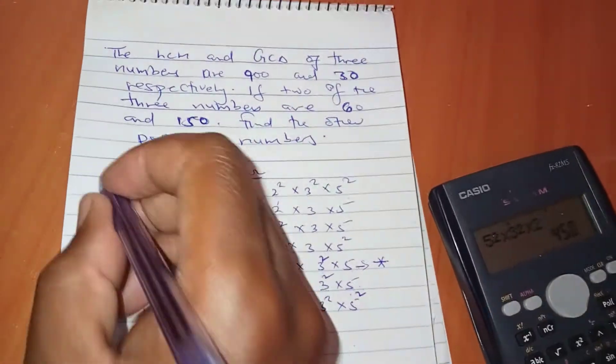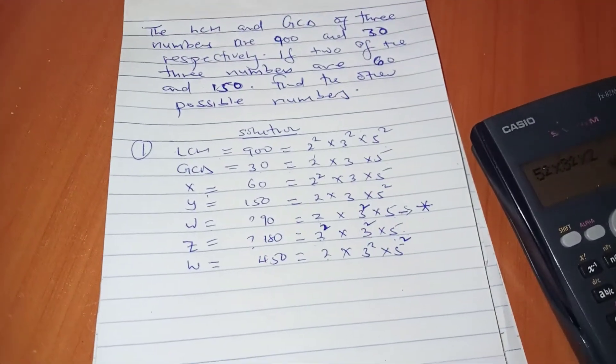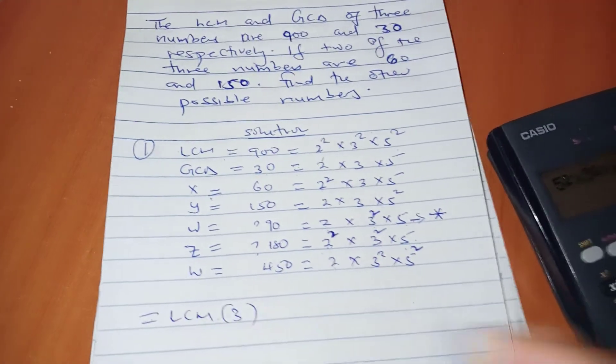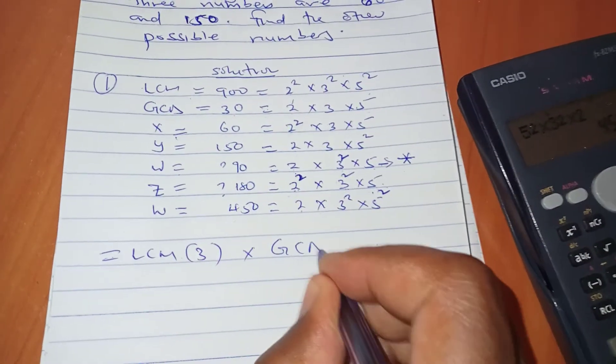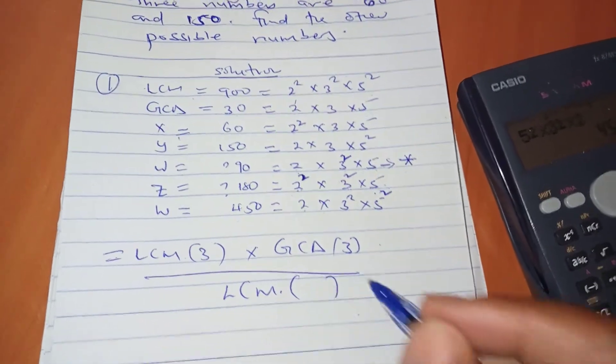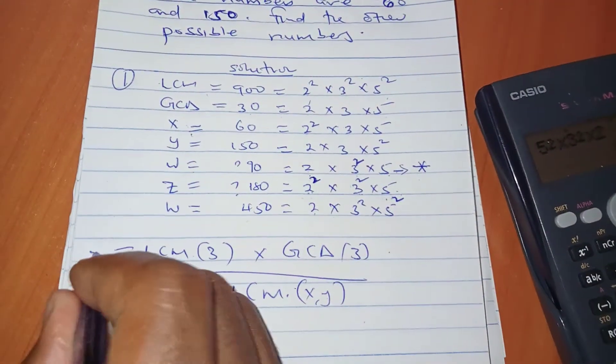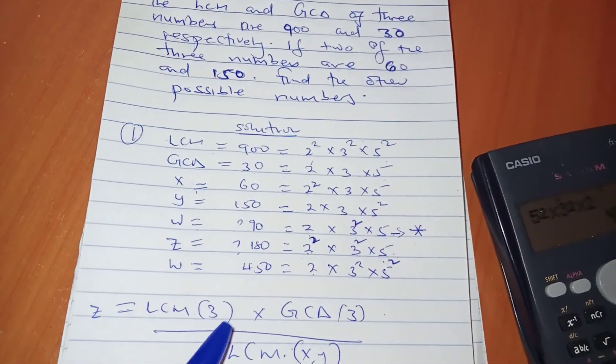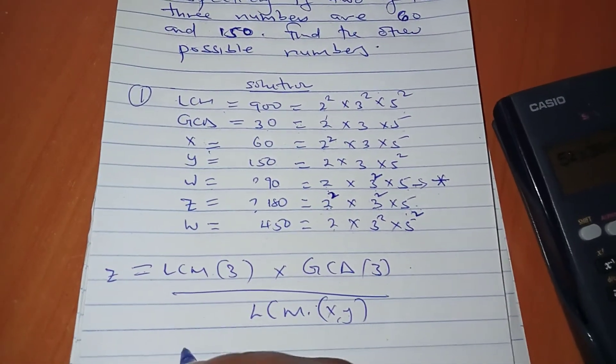I want to show you the second approach. This is more like a formula. You take the LCM of 3 numbers times the GCD of 3 numbers, divided by the LCM of the 2 numbers which were given initially. Let's call the unknown number Z, since we have X and Y.